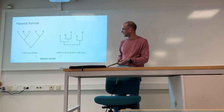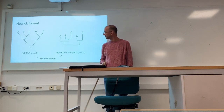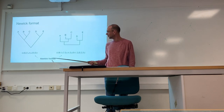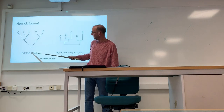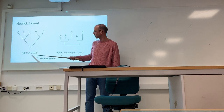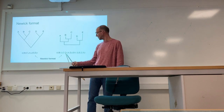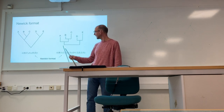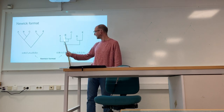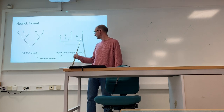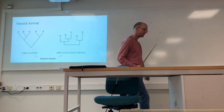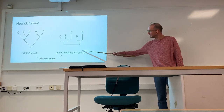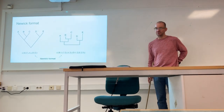You can represent trees in computers using Newick format, which encodes how things are related. For example, B and C are close together, then comes A, and then A, B, C are close to D and E. You can also include branch lengths: B has a distance of 1, C has a distance of 2, A has a distance of 2, D has a distance of 1, and E of 0.5. This is a standard format for handling trees computationally.